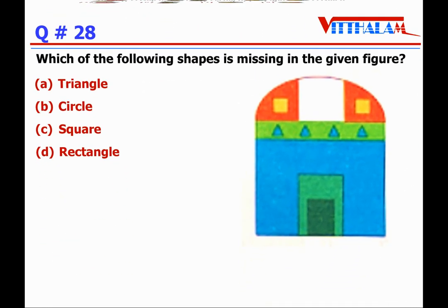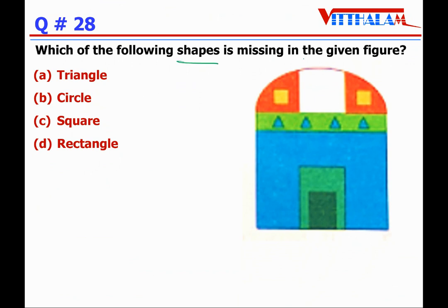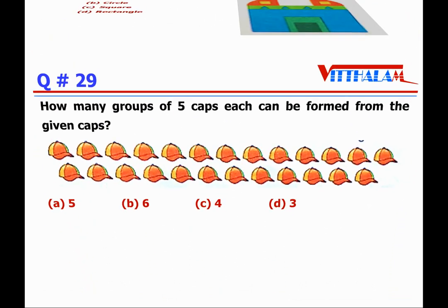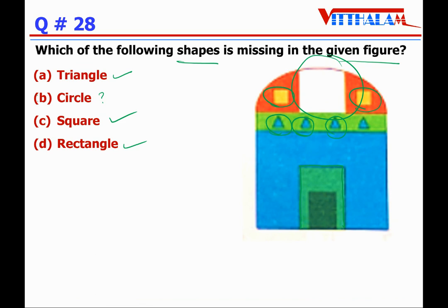Next, Question 28: which of the following shapes is missing in the given figure? Options are triangle, circle, square, rectangle. Triangle — yes, it is there. Circle — we don't see a full circle, only a semi-circle, so circle is a question mark. Square — yes, it is there. Rectangle — yes, the door frame is there. Therefore, the circle is the answer — the shape which is not there. So the answer is option B.